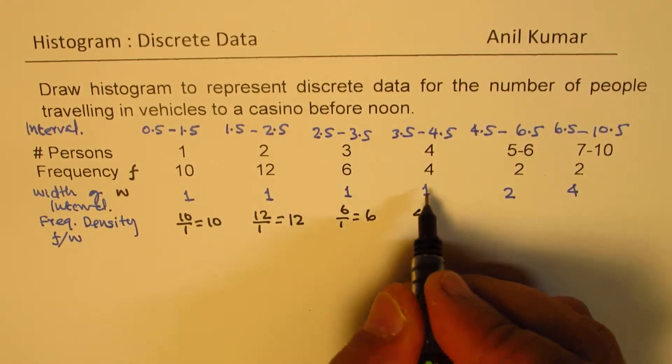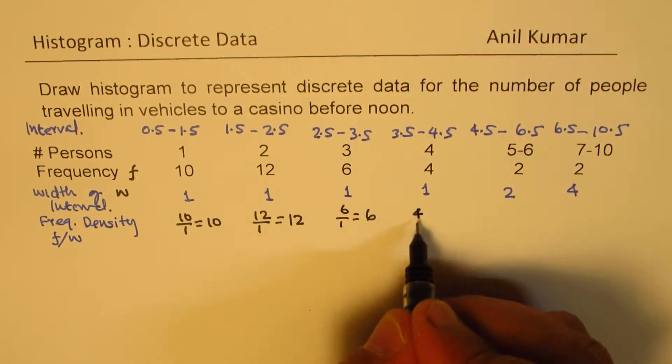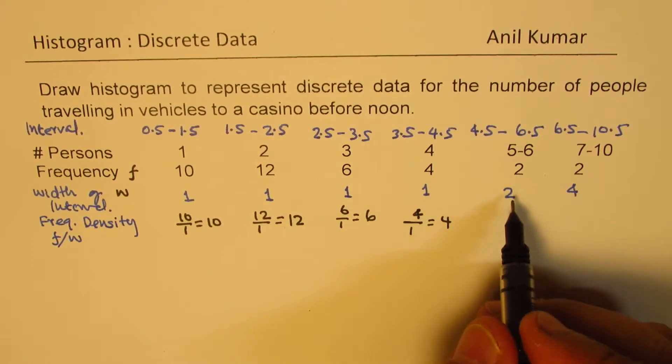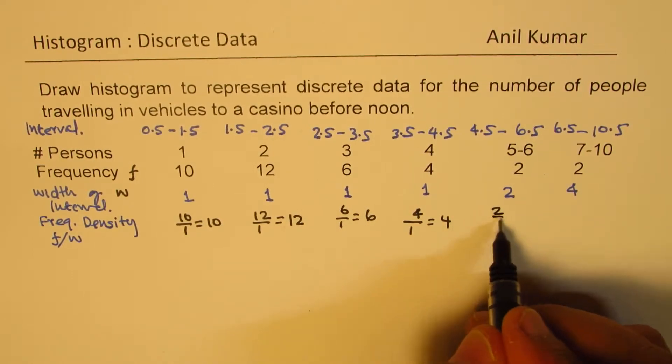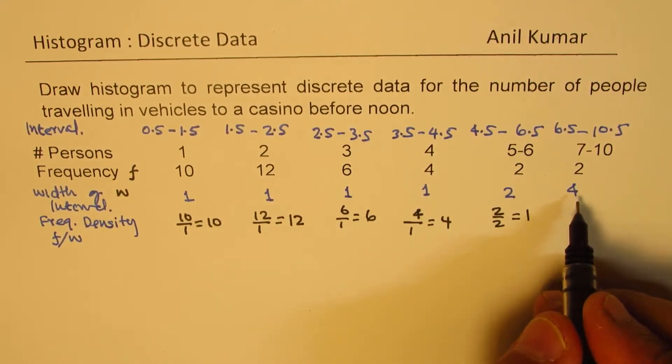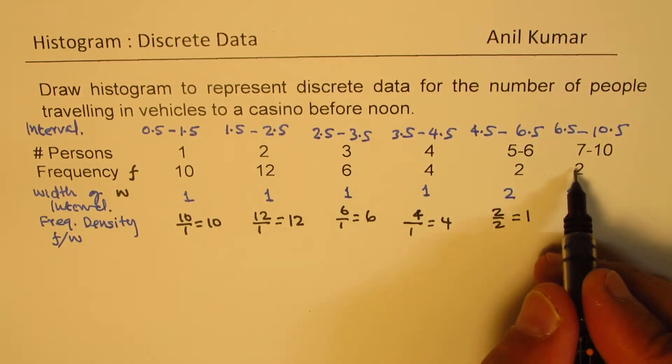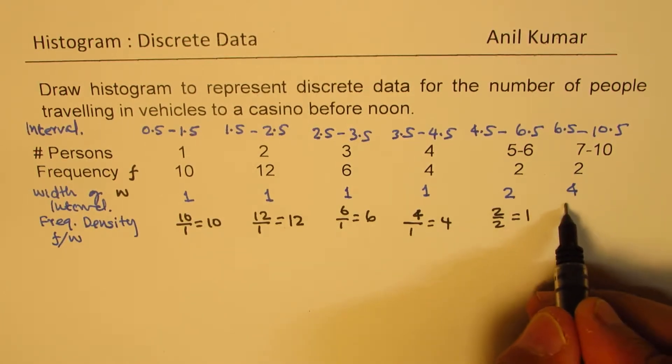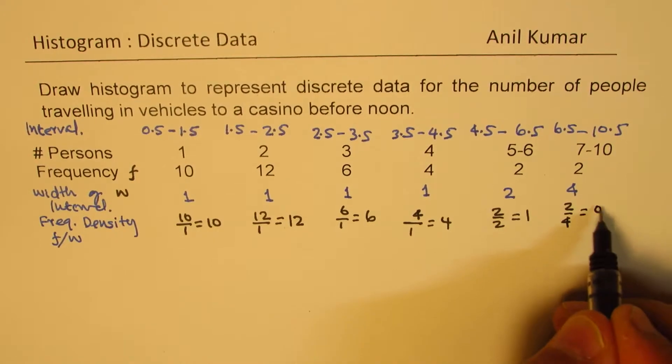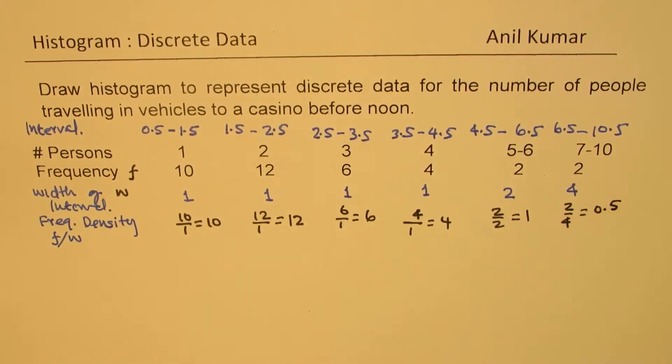Here it is 4 over 1, which is 4. So in this case, width is 2, so it is 2 over 2, which is 1. Here, frequency is 2, and the width is 4, so it is 2 over 4, which is 0.5. Is that clear to you? So that becomes the frequency density.